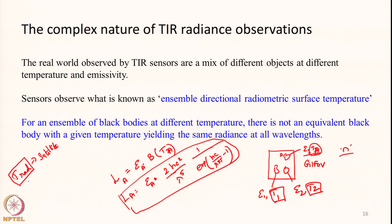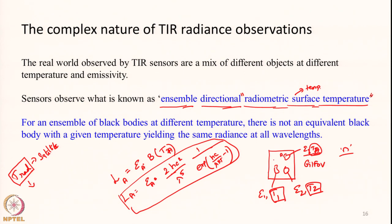This satellite-based temperature, coming from several objects, is strictly called the ensemble directional radiometric surface temperature. The radiometric surface temperature is the simple temperature we calculate from the satellite. 'Ensemble' means the recorded radiance and the temperature calculated from it is not due to any one particular feature on the ground — it is a mixture or average radiance of all features within the GIFOV. That is why we call it an ensemble: it is a mixture of several things.